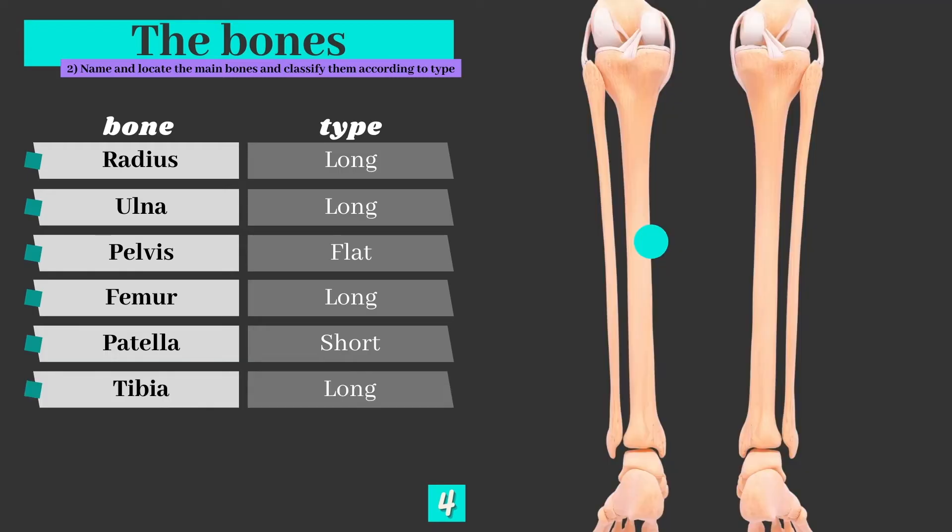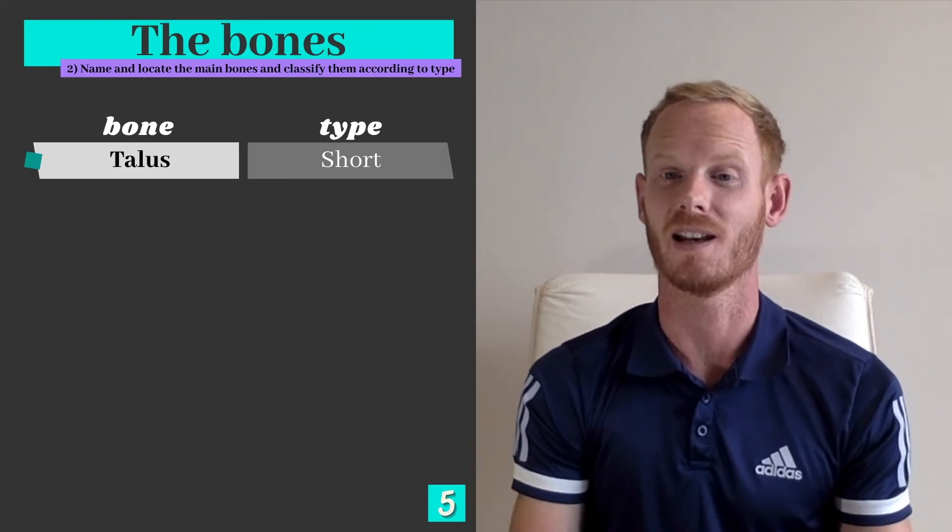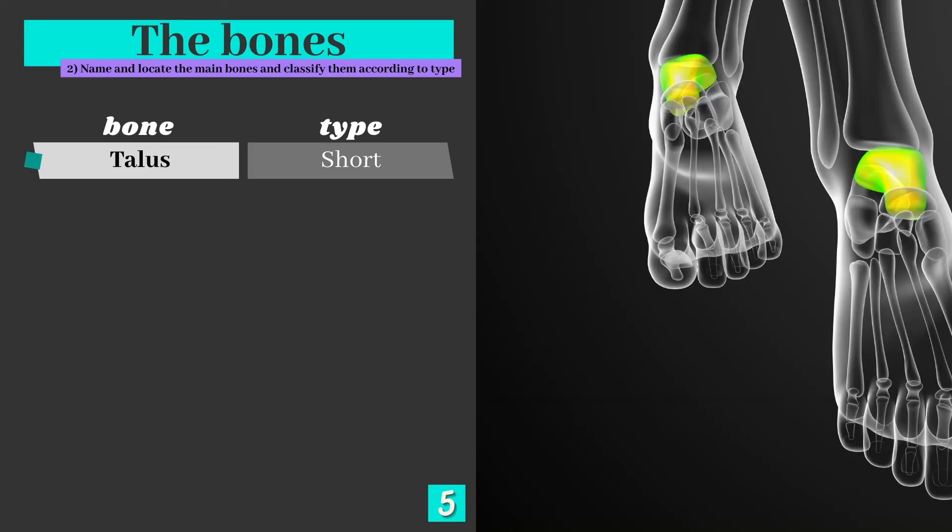The two long bones in the lower body are the tibia, which is the stronger, larger of the two bones, which sits at the front and is otherwise known as the shin bone. The fibula is slightly smaller and sits just alongside and behind the tibia. There are many bones within the foot and the first one we're going to look at is the talus. It sits at the top of the foot. It's a short bone and its main functions are to provide support and movement.